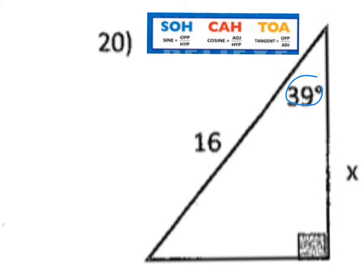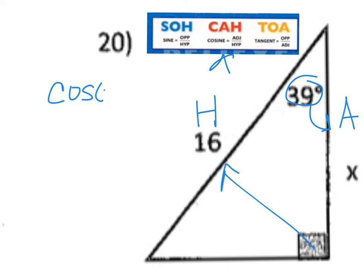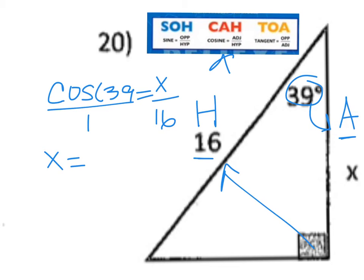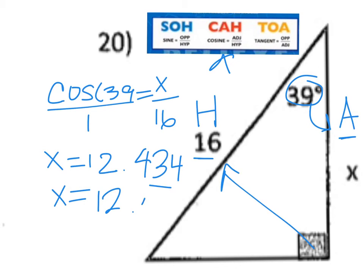Number 20 gave me an angle measure of 39 degrees, and I have a hypotenuse. The side next to the 39 is adjacent. So I'm looking for A and H, which brings me to the COSINE formula. The COSINE of 39 equals A over H, where A is X and H is 16. Putting this over 1 and cross multiplying, X equals COSINE of 39 times 16. In my calculator: COSINE of 39 in parentheses times 16, and X equals 12.434. Rounded to the nearest hundredth, that's 12.43.